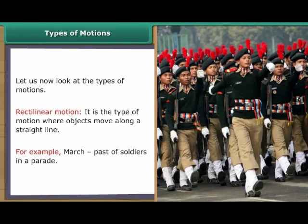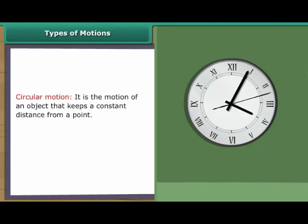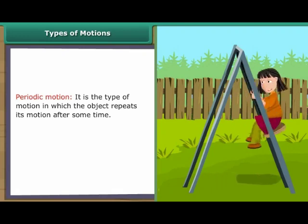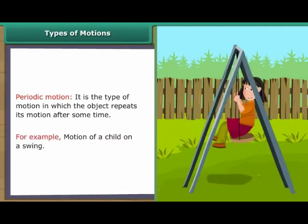Circular Motion. It is the motion of an object that keeps a constant distance from a point. For example, hands of a clock. Periodic Motion. It is the type of motion in which the object repeats its motion after some time. For example, motion of a child on a swing.